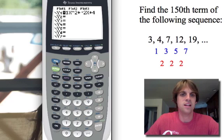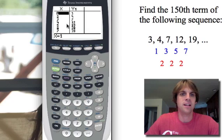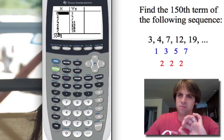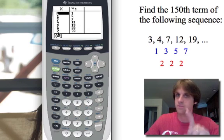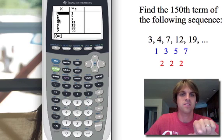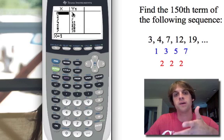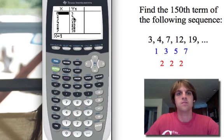If I go to the table now, I can see that as x values change. Remember, in this case, x represents the term number. That's important. So the first term, second term, third term. And then the corresponding data for that, of course, is 3, 4, 7. So if I go to the fifth term, it's 19, which exactly matches our data that we were given.